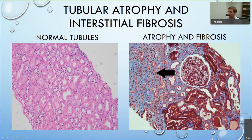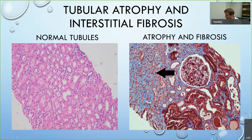Tubular atrophy and interstitial fibrosis — the T-score. Here's normal tubules, back-to-back kissing each other as Dr. Chung says. On the trichrome stain — the blue highlights areas of fibrosis or scar tissue. This is chronic damage that cannot be fixed. The tubules are shrunken and small, the space between them is increased. Once scar tissue comes down, it can't be taken away — if I could figure out how to get rid of this, I'd probably win a Nobel Prize.